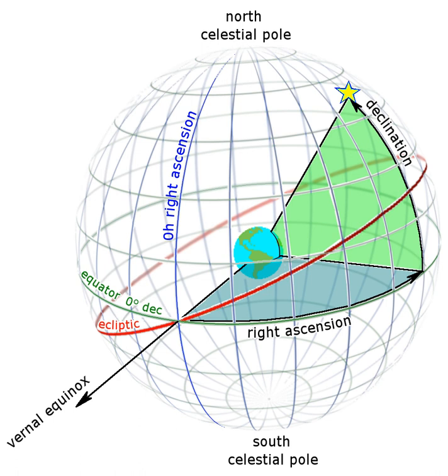As seen from locations in the Earth's northern hemisphere, celestial objects with declinations greater than 90 degrees minus φ, where φ equals observer's latitude, appear to circle daily around the celestial pole without dipping below the horizon, and are therefore called circumpolar stars.